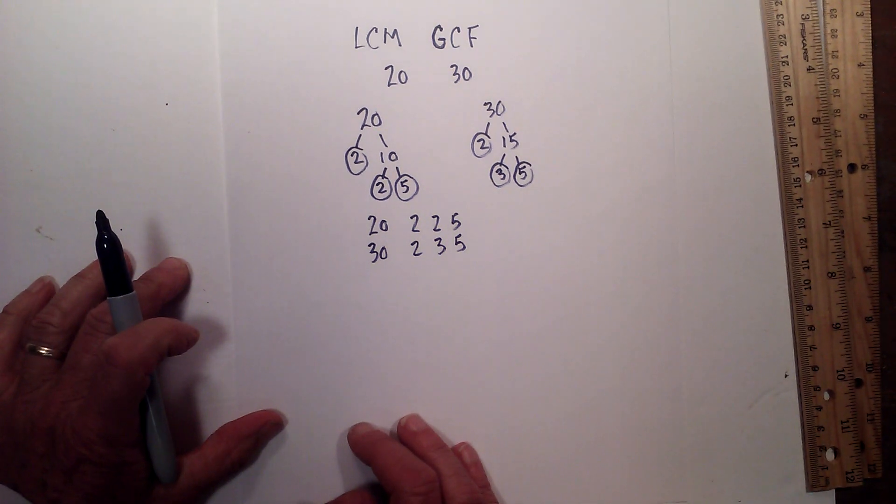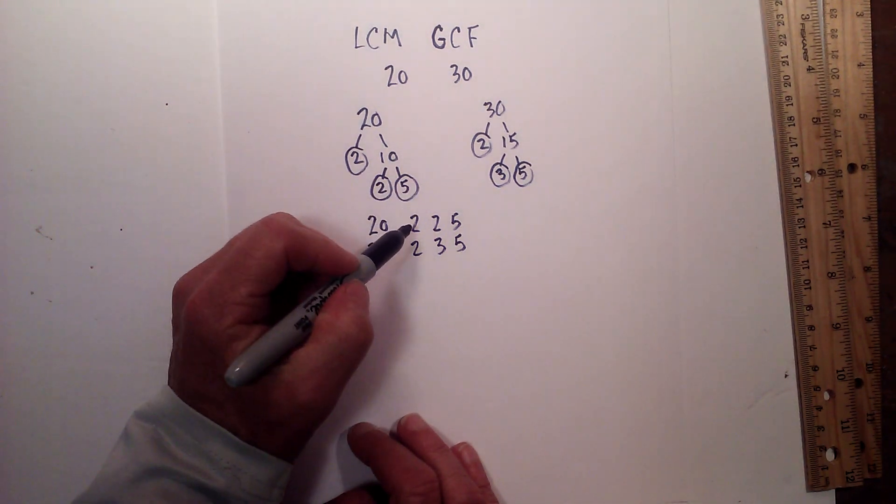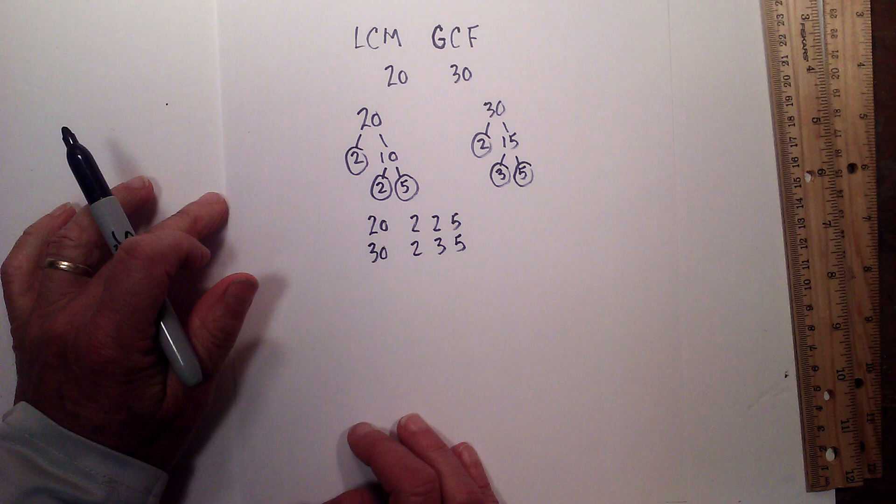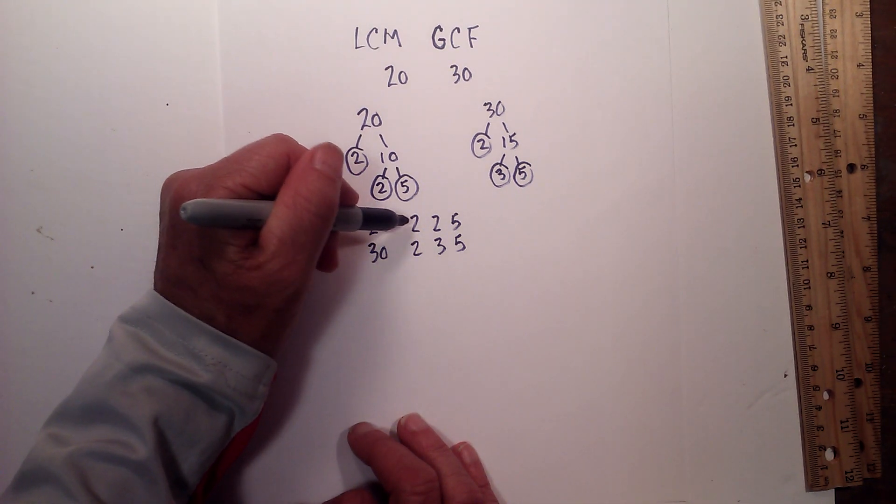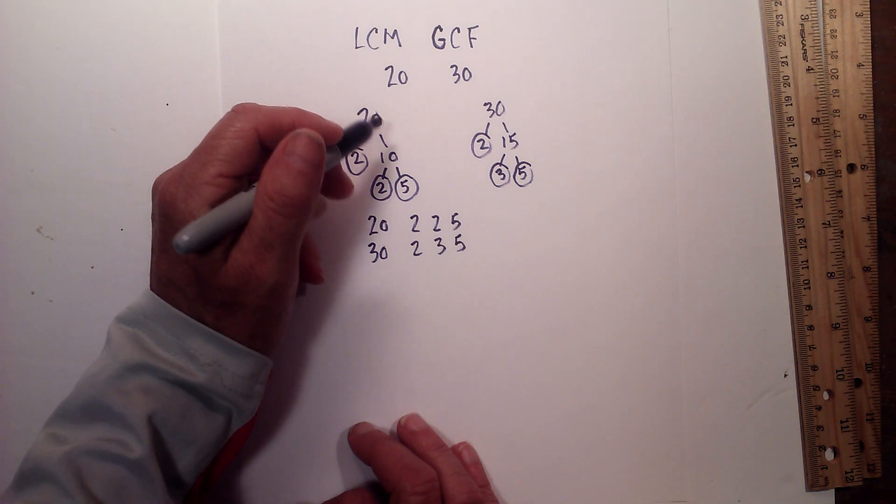Now for the least common multiple, basically we just multiply all the prime numbers together, except if you have a duplicate prime number in both the 20 and the 30, you only multiply it once.